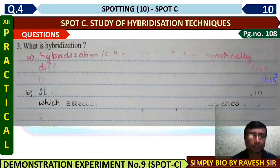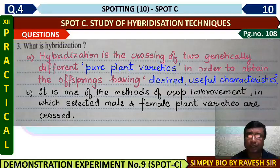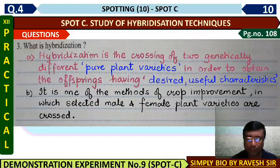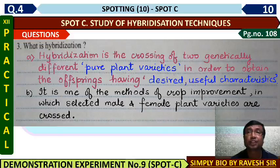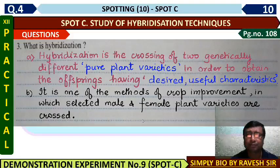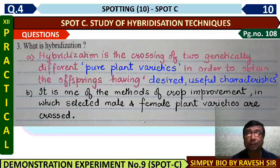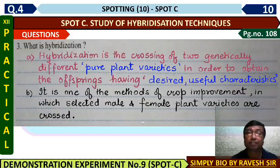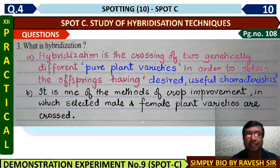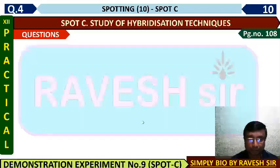What is hybridization? Hybridization is a crossing method of crop improvement in which selected male and female plant varieties are crossed in order to get desired or useful characteristics in the offspring. If the characteristics result in an improved version, it shows heterosis. This is the most important process in plant breeding.